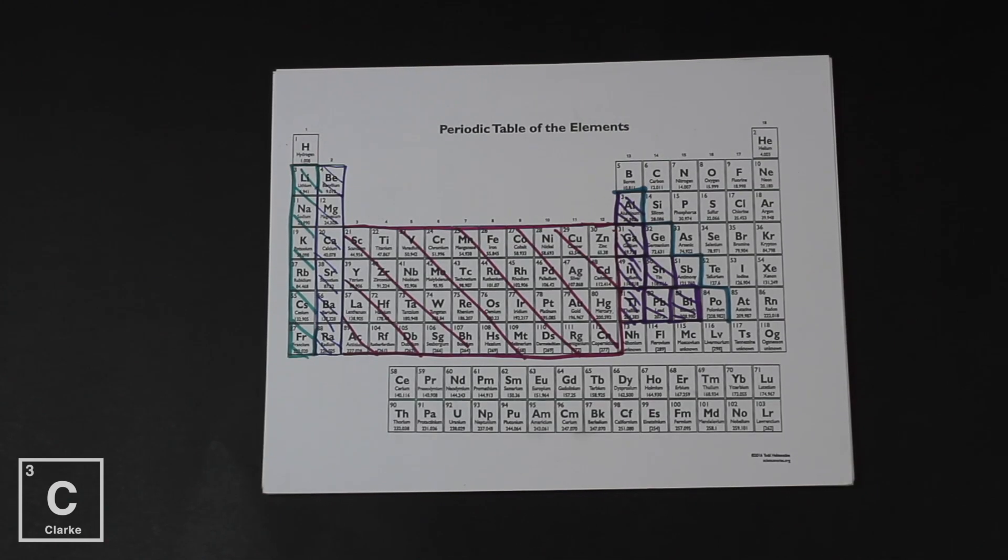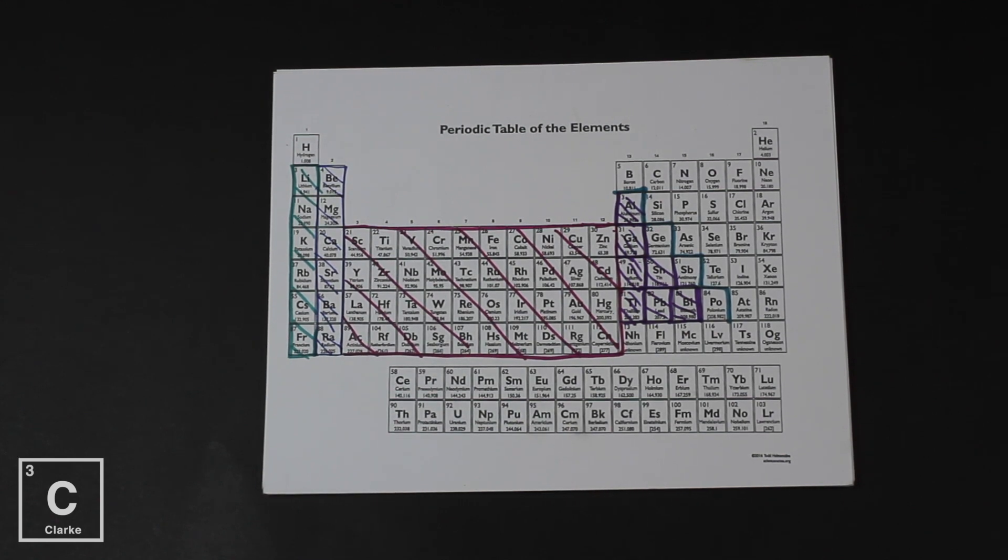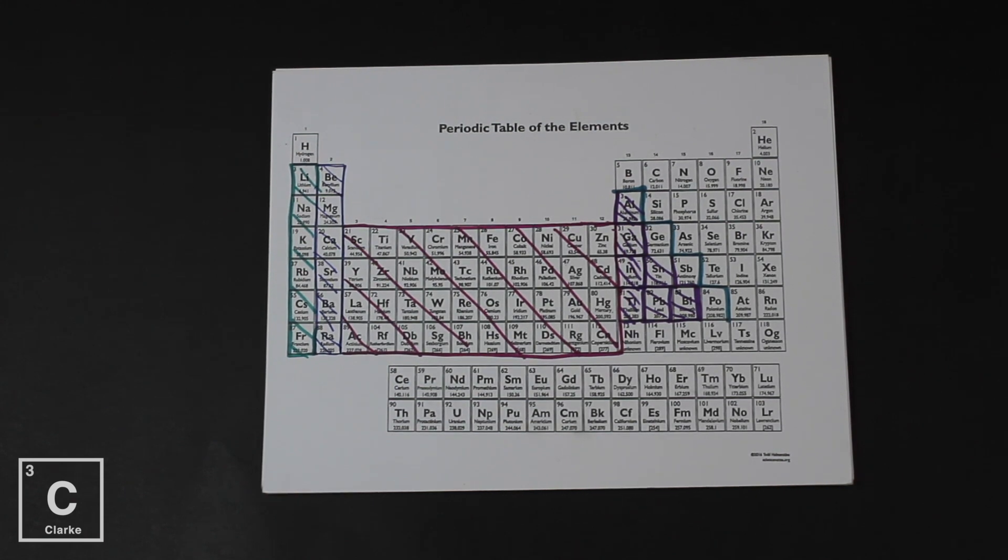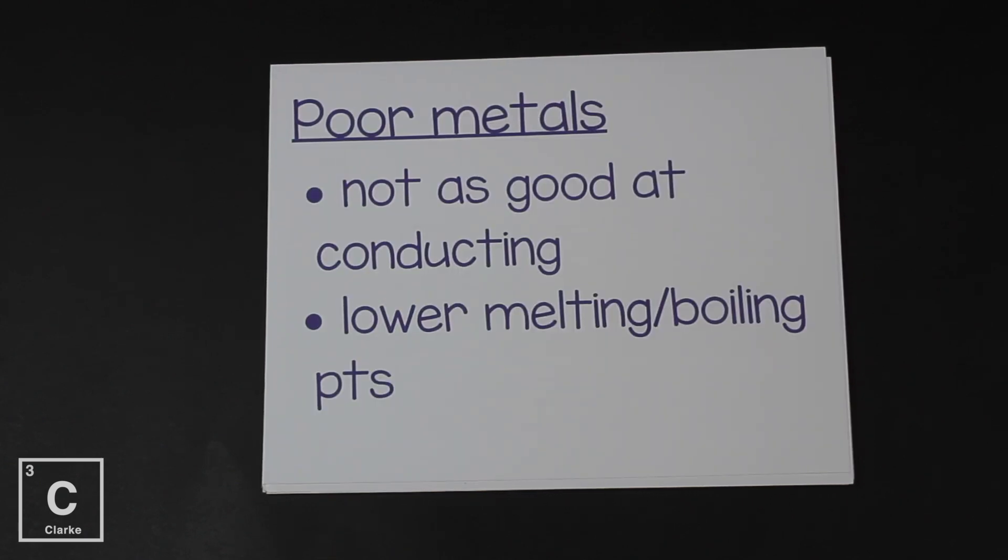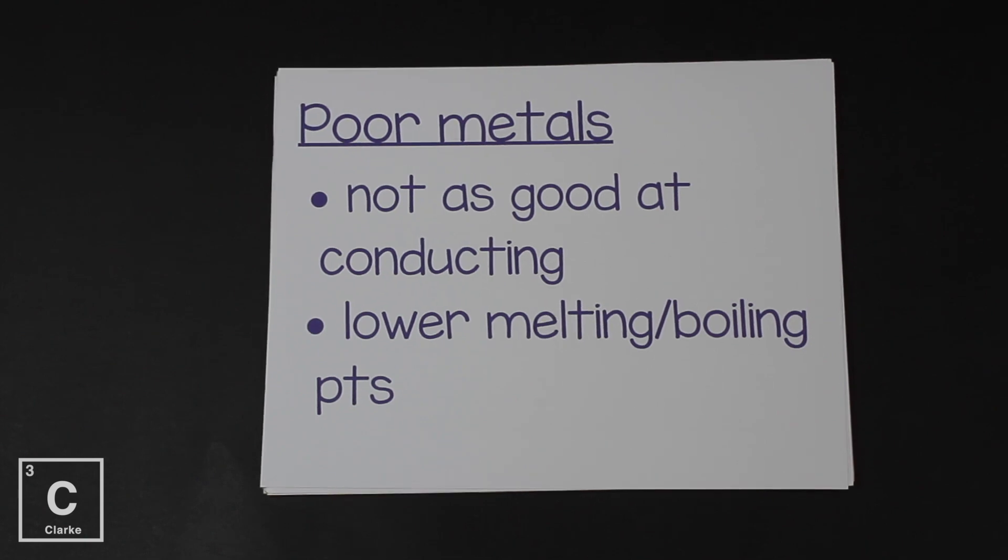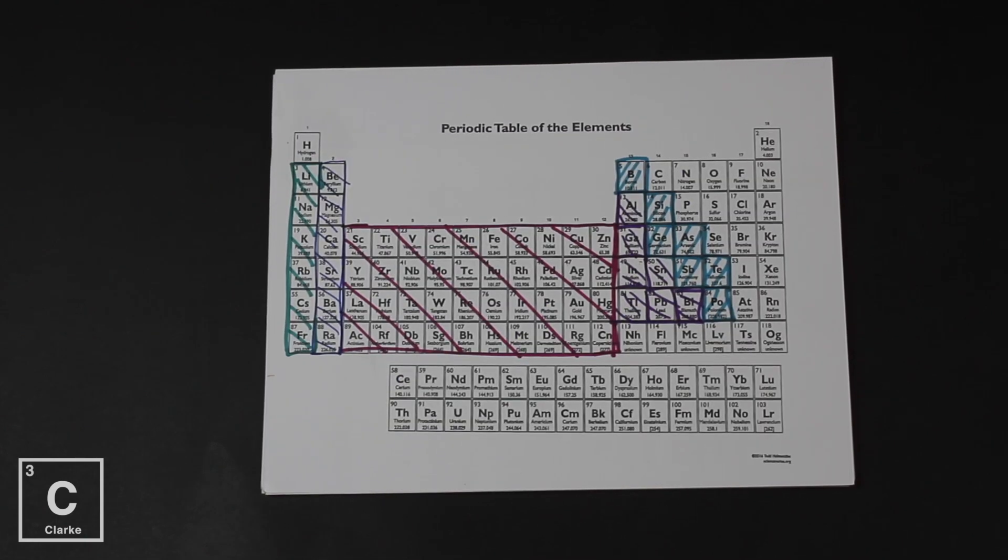This next group, the purple one, we call these the poor metals. They're still metals, but they're not as good at being metals as the transition metals and the alkali and alkaline earth metals. The poor metals are not quite as good conductors - they can still conduct, just not so good - and they have lower melting and boiling points.